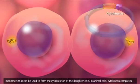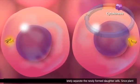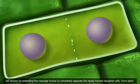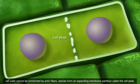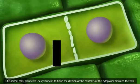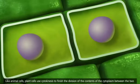In animal cells, cytokinesis completes cell division by extending the cleavage furrow to completely separate the newly formed daughter cells. Since plant cell walls cannot be constricted by actin fibers, vesicles form an expanding membrane partition called the cell plate. Like animal cells, plant cells use cytokinesis to finish the division of the contents of the cytoplasm between the two identical daughter cells.